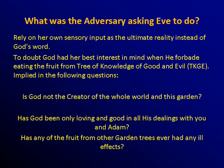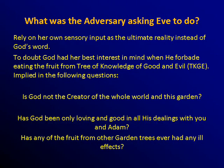What was the adversary trying to get Eve to do? He flew up into the tree and started munching on the fruit — what was he after? He wanted her to rely on her own sensory input as the ultimate reality instead of God's word. And we still have that situation going today — it hasn't changed. He wanted her to say, 'Don't just take what that guy claims. You have eyes and ears and a good brain. You can figure out for yourself what is really factual and what isn't.'